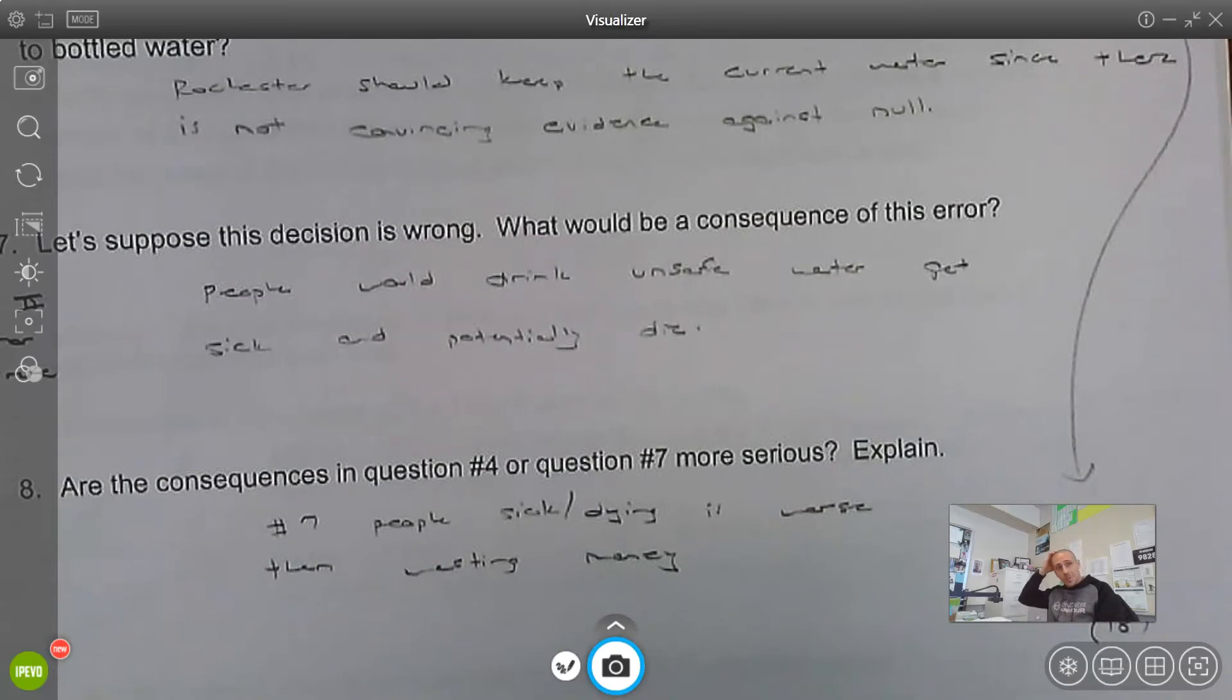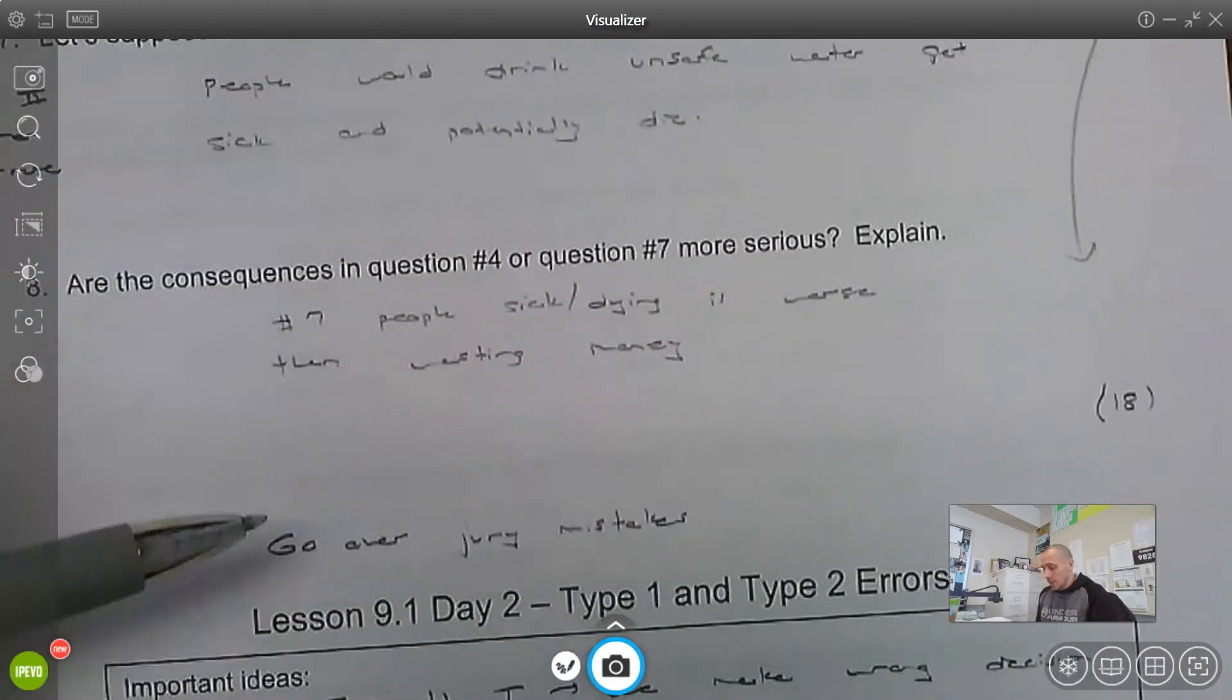So when you get to question 8, to me the consequence in number 7 is much more serious than the consequence in number 4. Number 4, we're spending some extra time and money and resources on bottled water. But in number 7, you're putting people at risk, their health at risk. So I'll tell you this: a lot of times on the AP exam, they'll ask you what's a Type 1 error, what's a Type 2 error in context, and then they'll talk about what are the consequences. And they may even ask which consequence is worse. That's subjective. You can argue that either way.